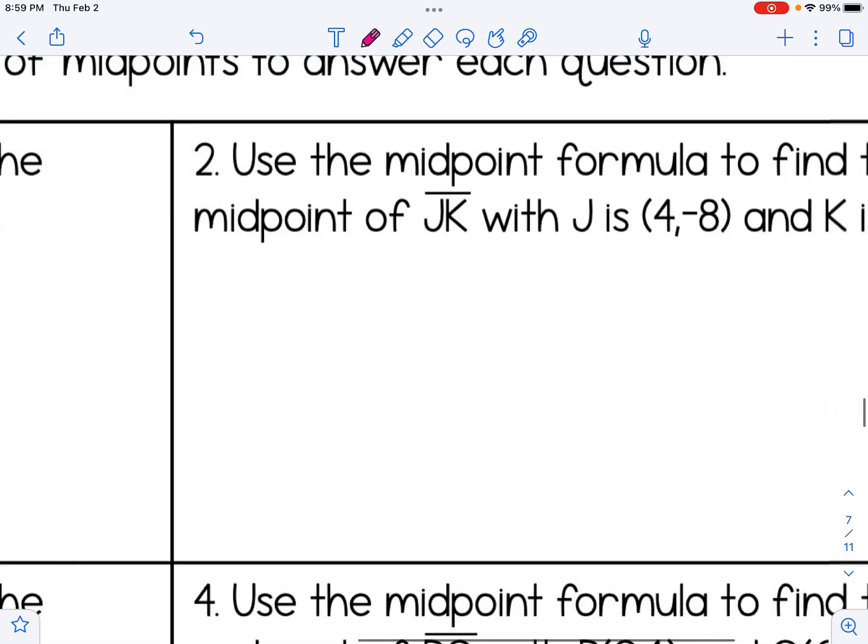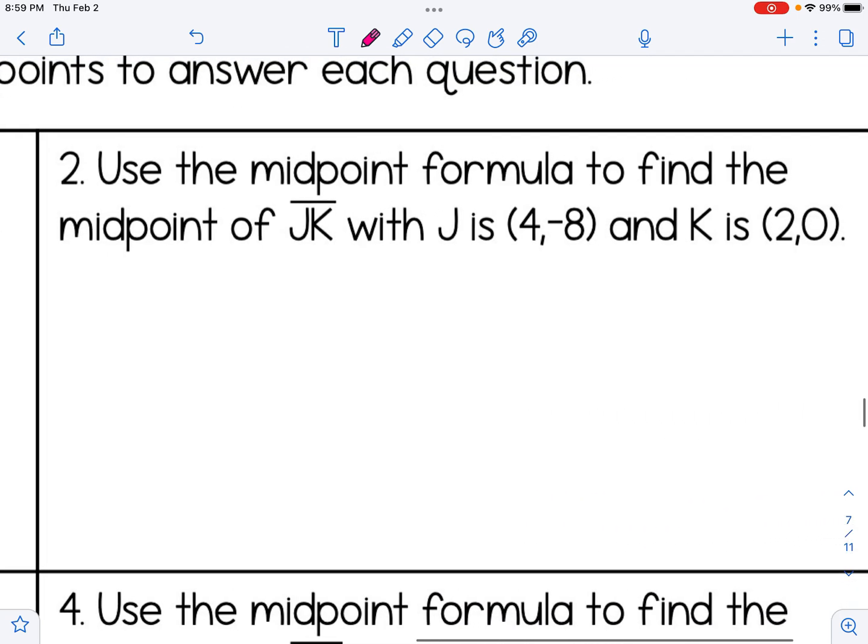We're going to follow that same process on a few more problems. Number two, we're going to basically just change out the points. So we are adding our x's, 4 and 2, add our y's, -8 and 0. And we get (3, -4) as our midpoint when we simplify that.